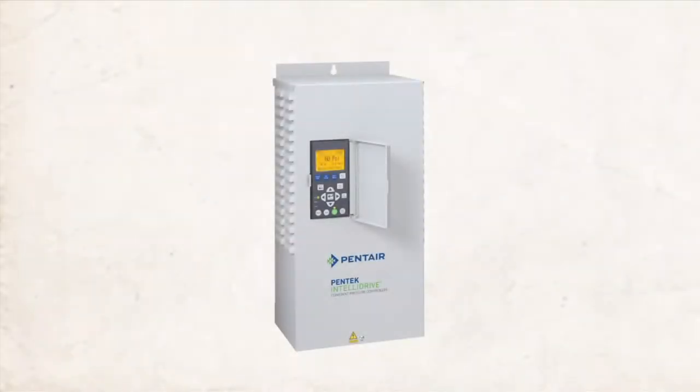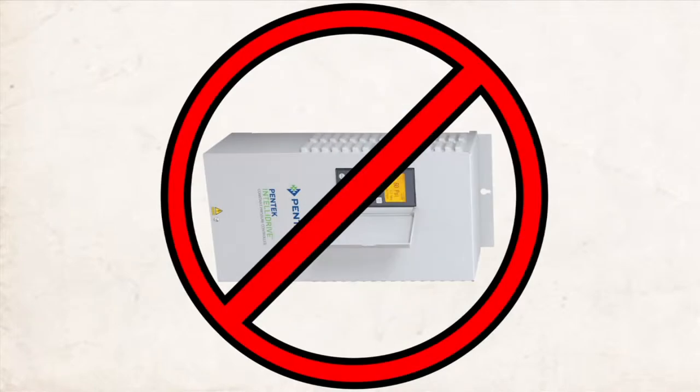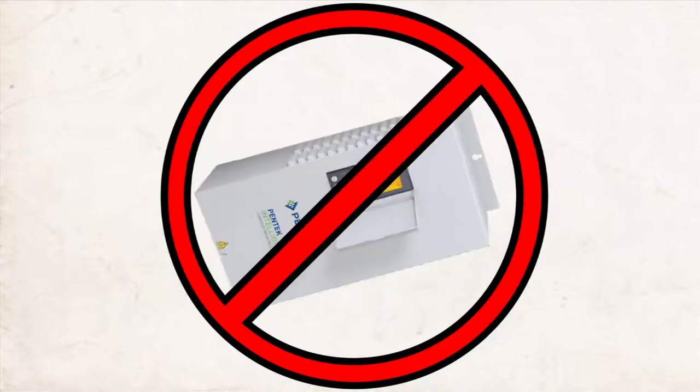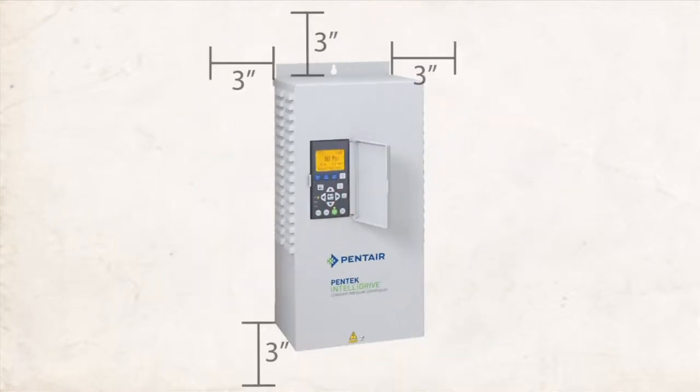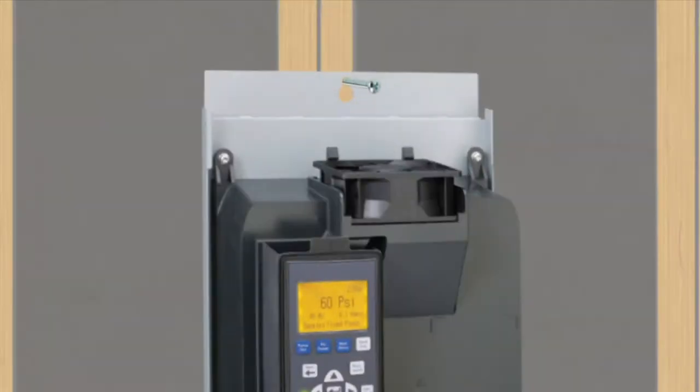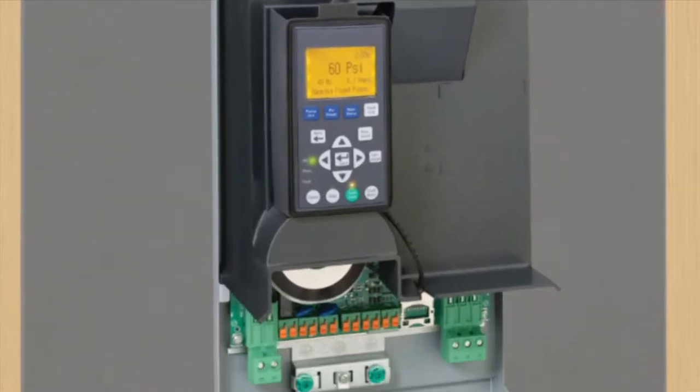There are a few things to keep in mind when selecting a location. First, the Pentek IntelliDrive must be installed vertically. Next, make sure to leave three inches of clearance around the drive to ensure proper cooling. And when mounting to a wall, be sure that the top and bottom screws are entering a stud or post.